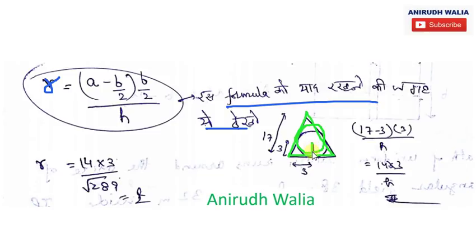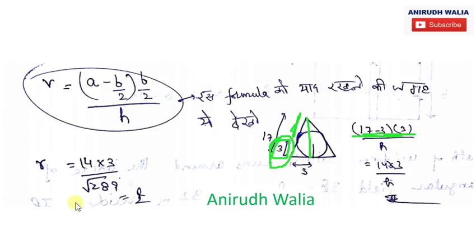This distance times this distance divided by height. Now this distance - the total is 17 and this distance is 17 minus 3, that is 14. So 14 into 3 divided by H. H we have calculated for the triangle as root 280. So 14 into 3 upon root 280. This is the inradius we have found.